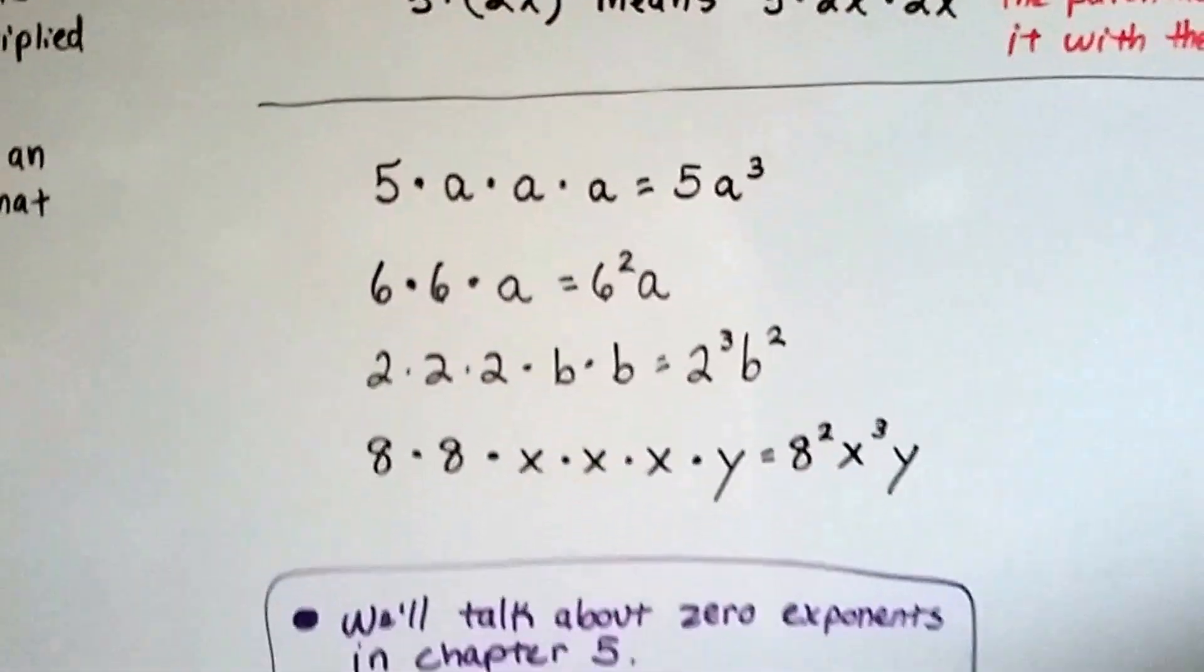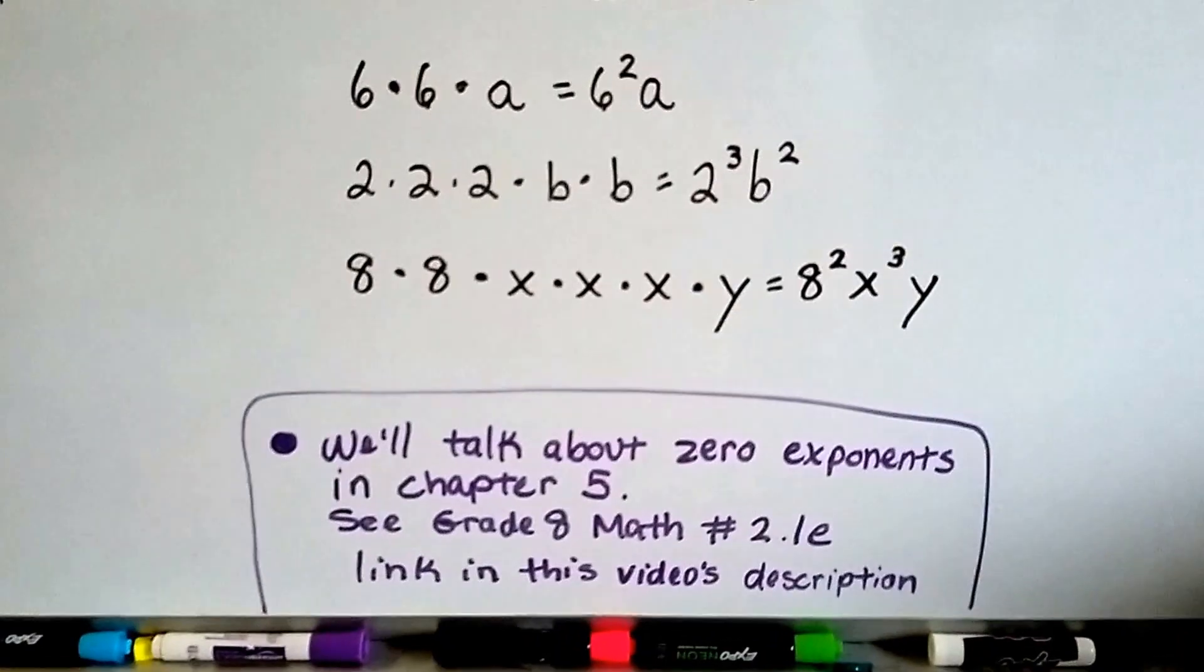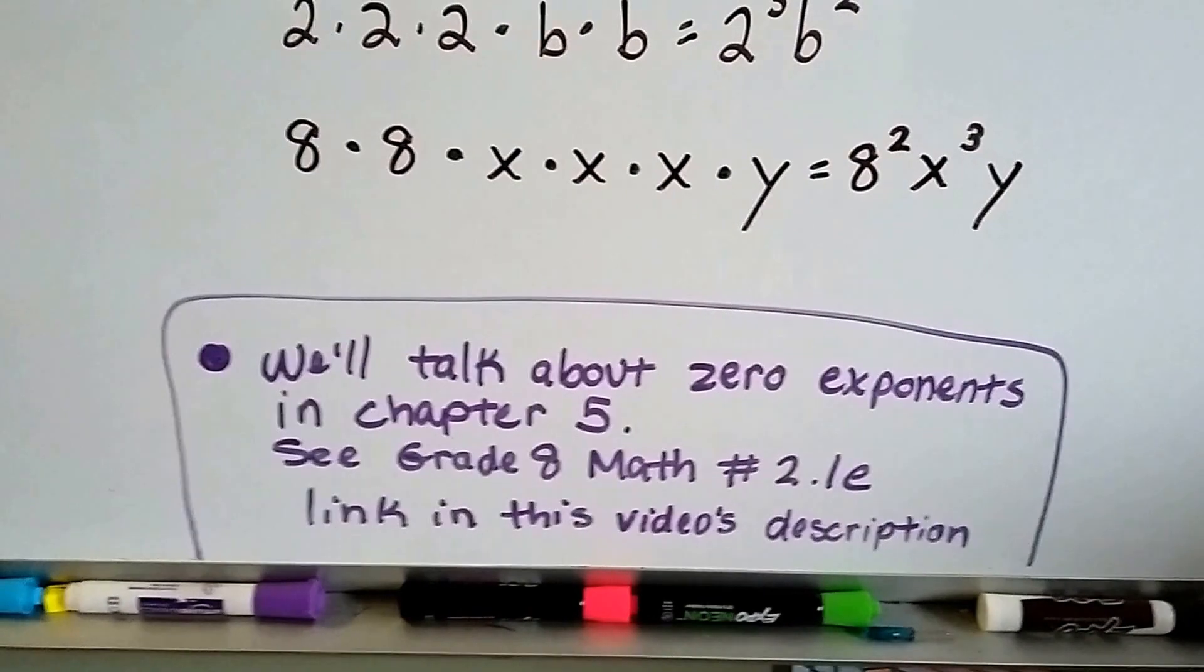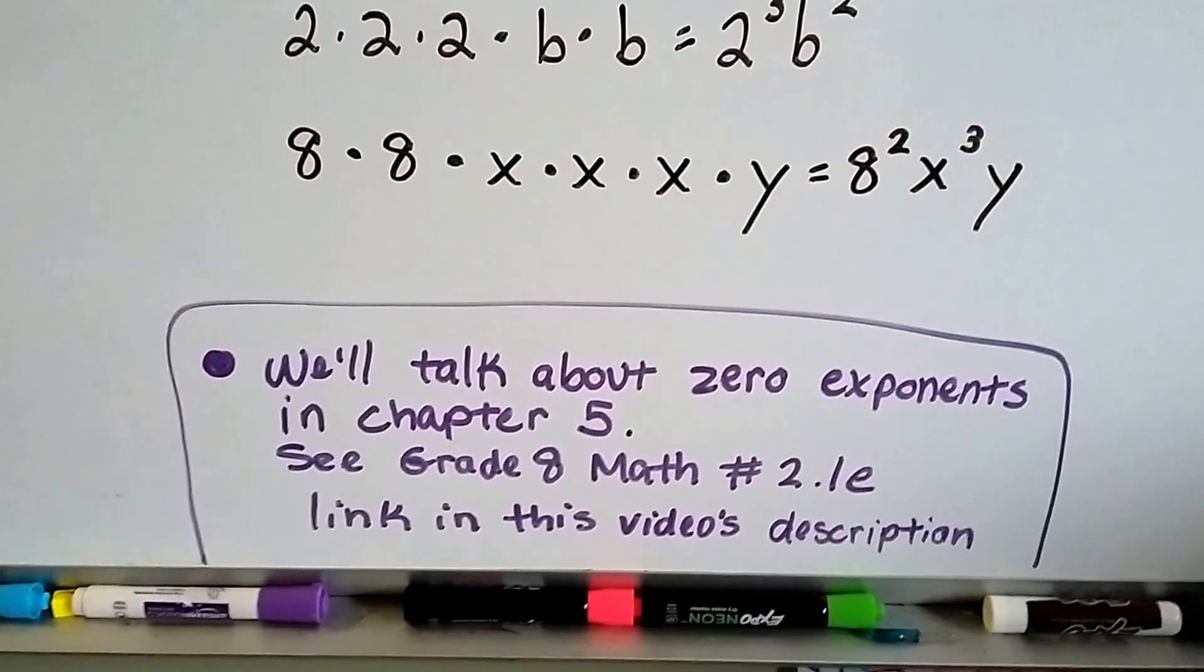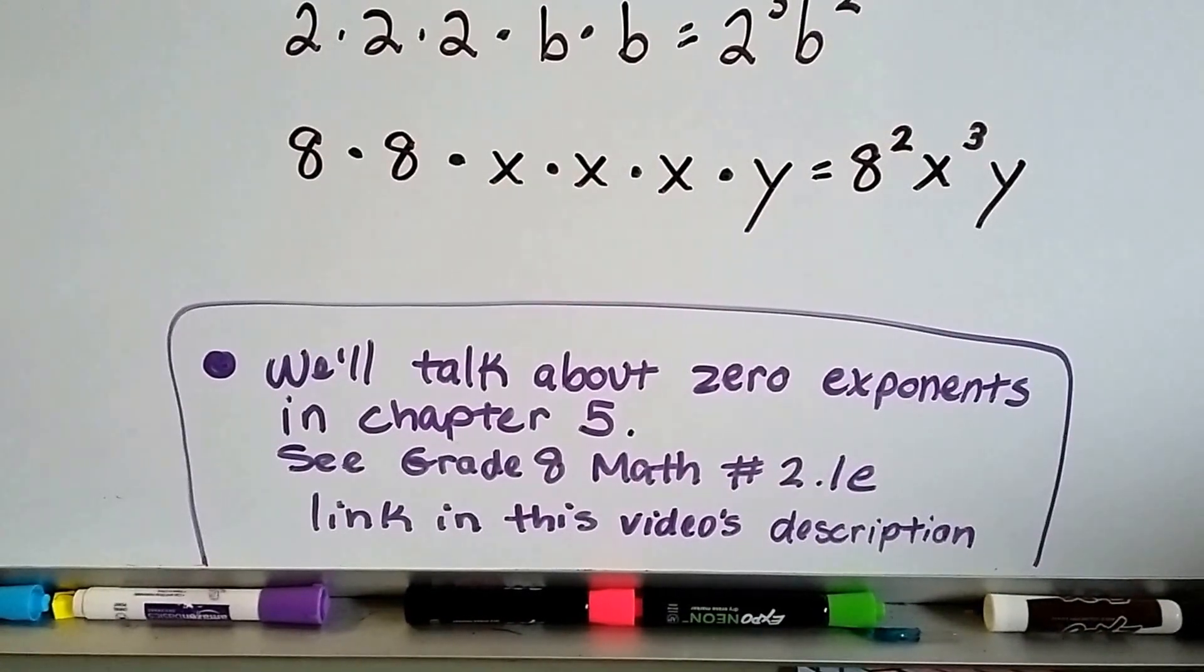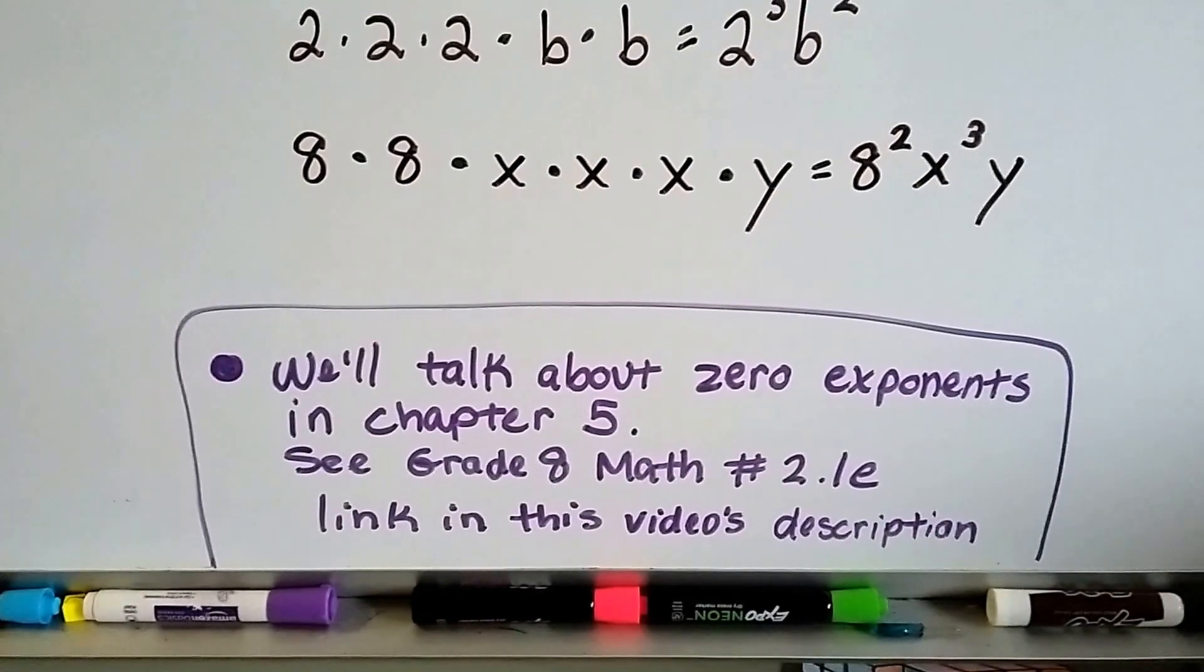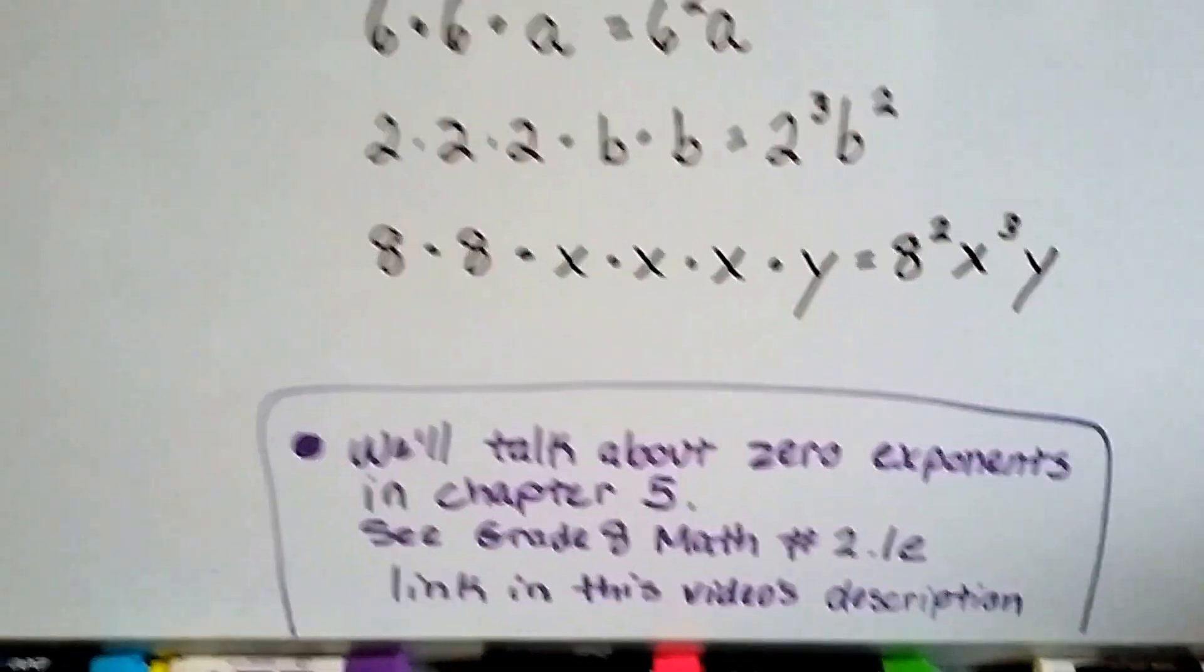Now, if you're very curious about zero exponents, what happens when there's a zero up there, we're going to talk about zero exponents in Chapter 5. That's a couple hundred pages away. But if you want, watch the Grade 8 Math video number 2.1e. I talked about the zero exponent rule in there, and there's a link in this video's description.